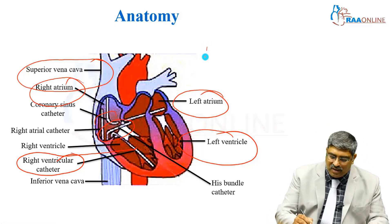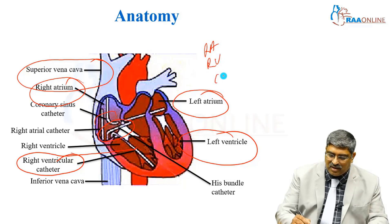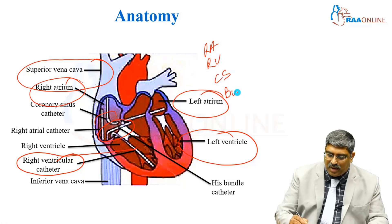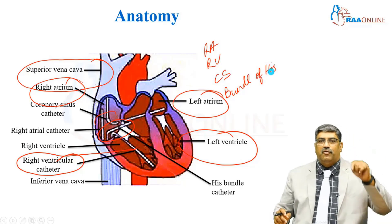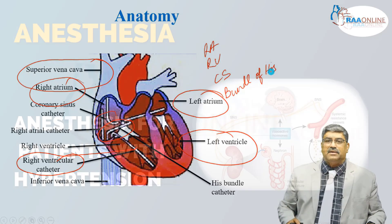So you have the right atrial catheter, right ventricular catheter, coronary sinus catheter, and the bundle of His catheter — giving us a total of four catheters.